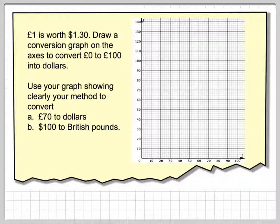In this video, we're going to look at drawing a conversion graph where one pound is worth one dollar thirty. Draw a conversion graph on the axes to convert zero pounds to 100 pounds into dollars. Then use your graph, showing clearly your method, to convert 70 pounds to dollars and 100 dollars to British pounds.